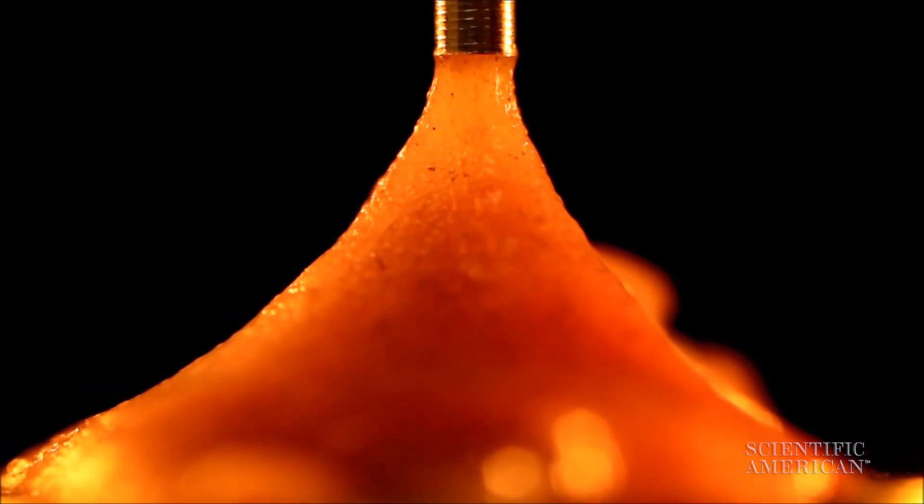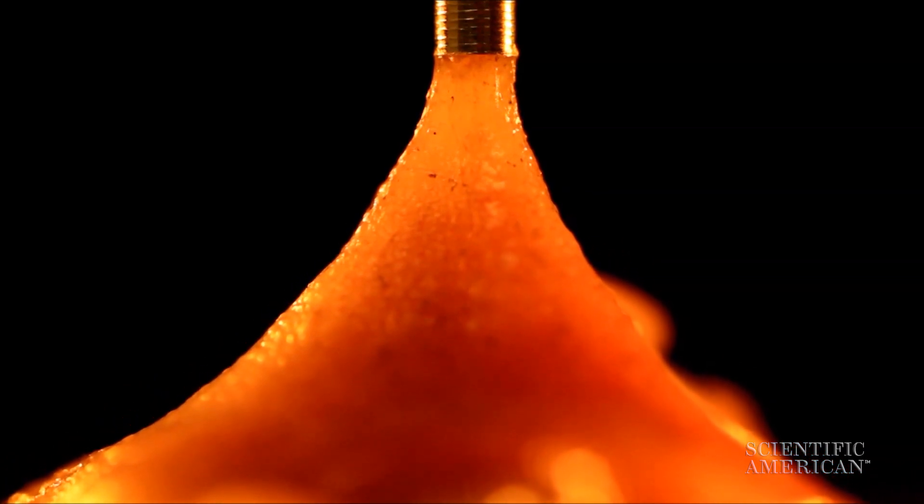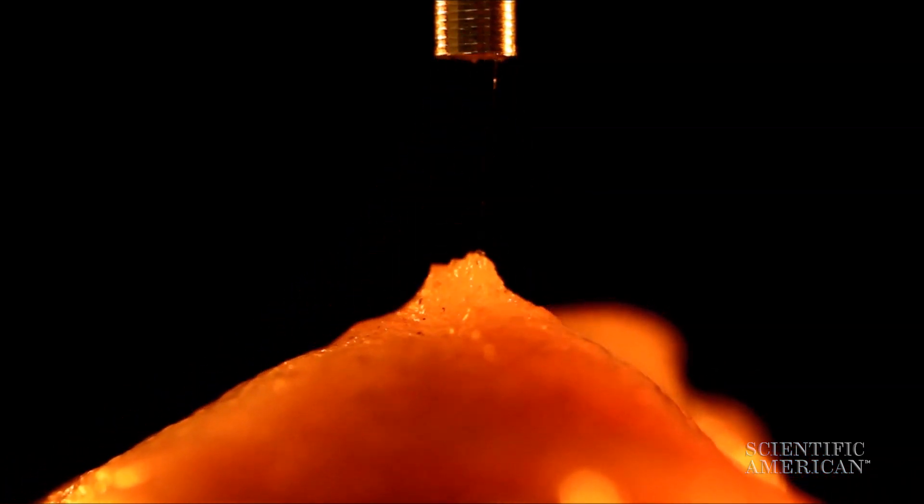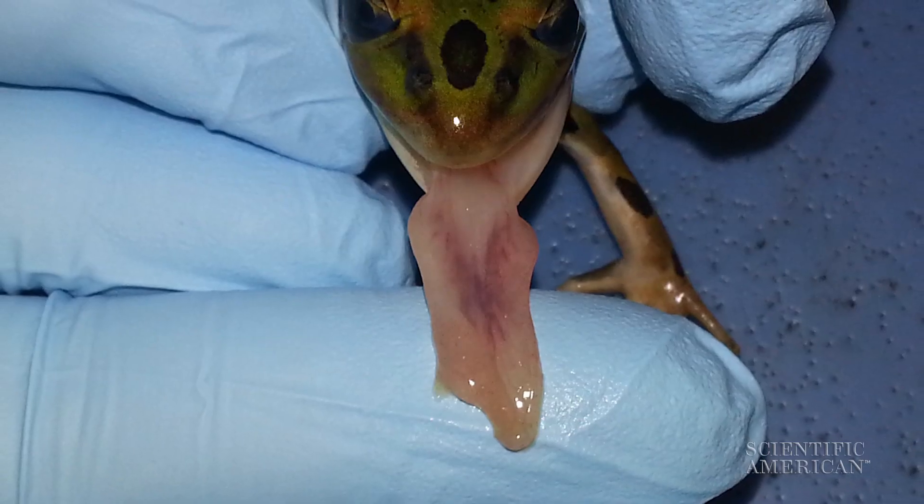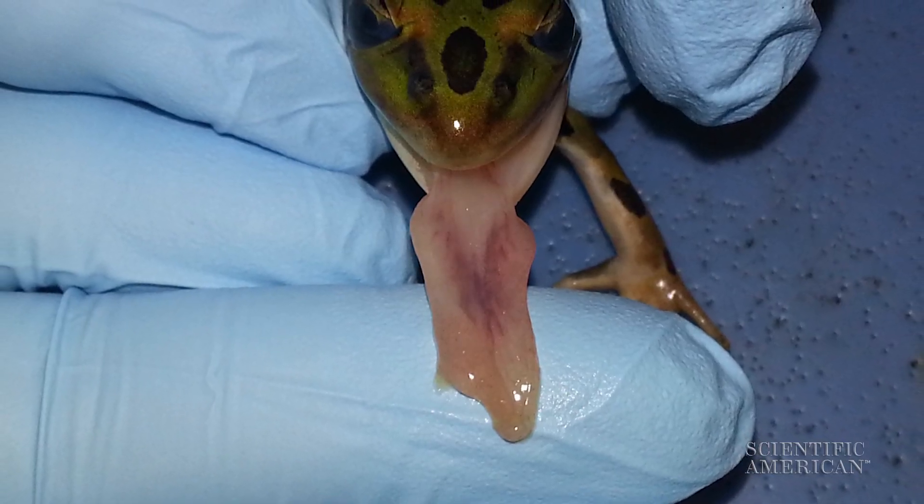First, Noel studied the physical properties of the tongue. It was so soft, Noel had to design special equipment to get an accurate softness measurement. It's even softer than brain tissue, even softer than a marshmallow.